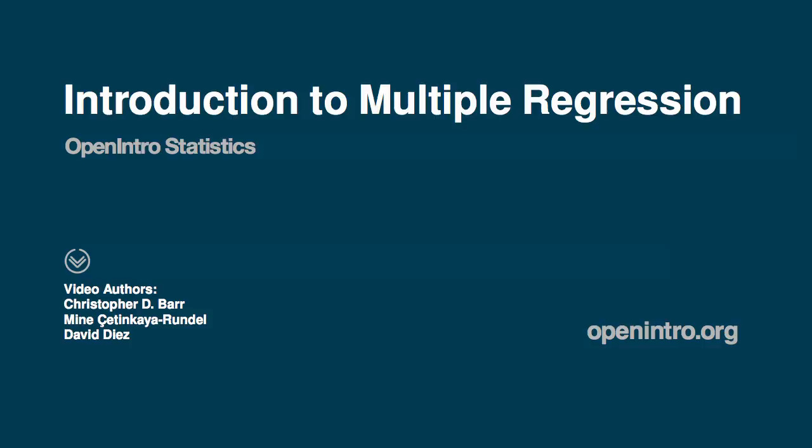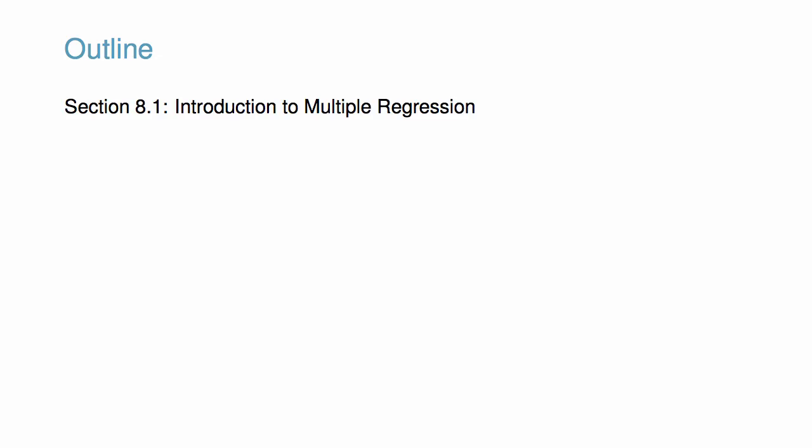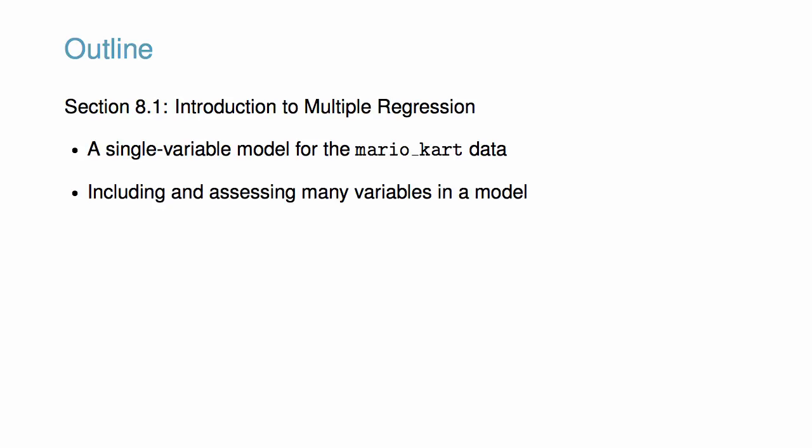This video accompanies the introduction to multiple regression section in OpenIntro Statistics. We'll begin by reviewing a single variable model for the Mario Kart data, which includes information about eBay auctions for Mario Kart video games. Then we'll try including and assessing many variables in our model.